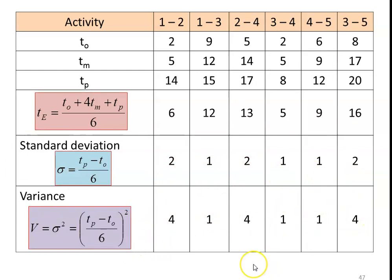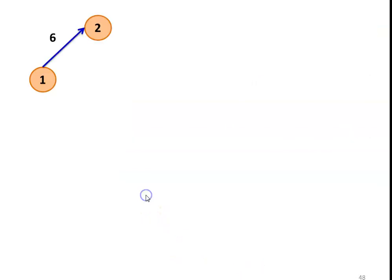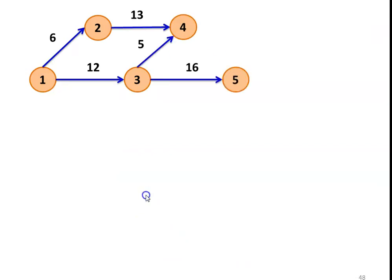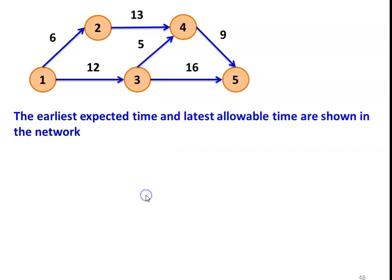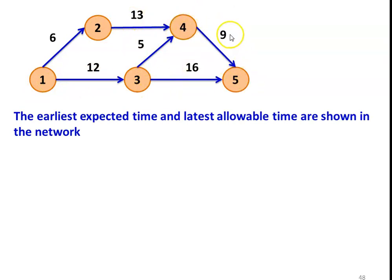These are all the various computations of the PERT network. Now we draw the network with all the TE values calculated: 1 to 2 is 6 days, 2 to 4 is 13 days, 1 to 3 is 12 days, 3 to 4 is 5 days, 3 to 5 is 16 days, and 4 to 5 is 9 days.